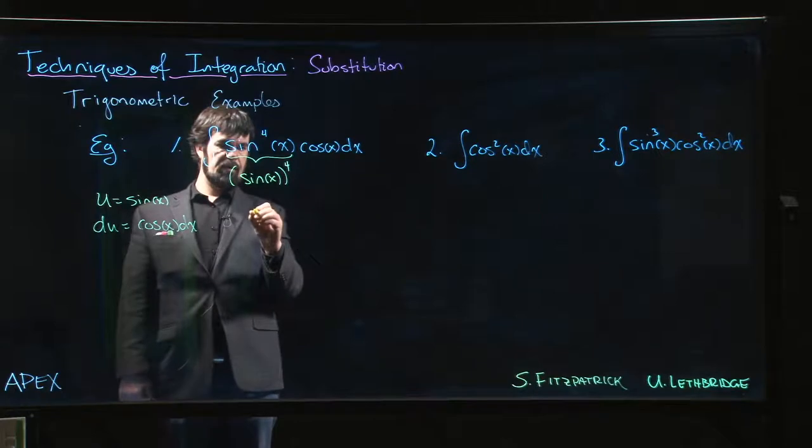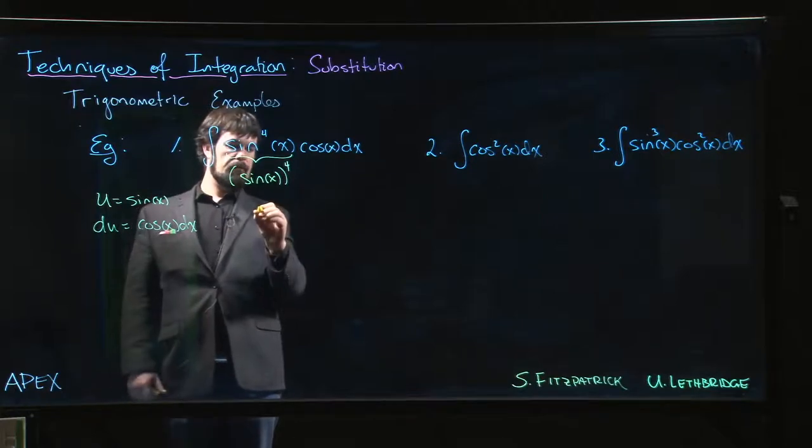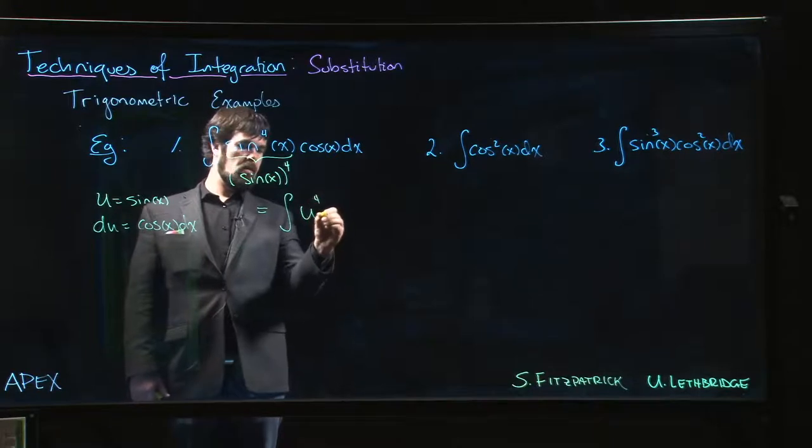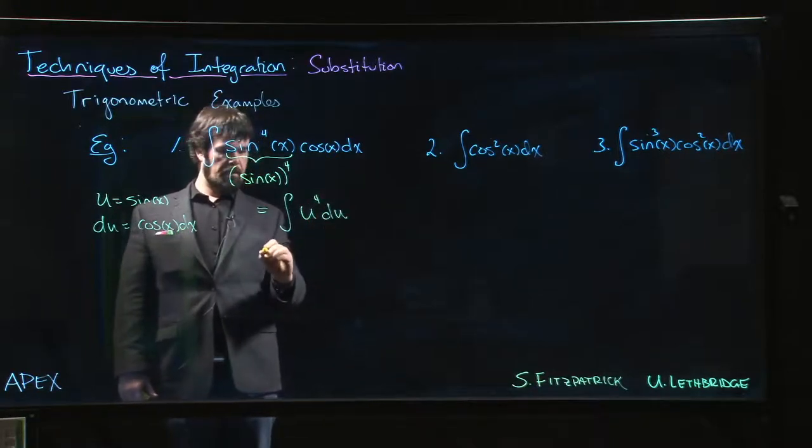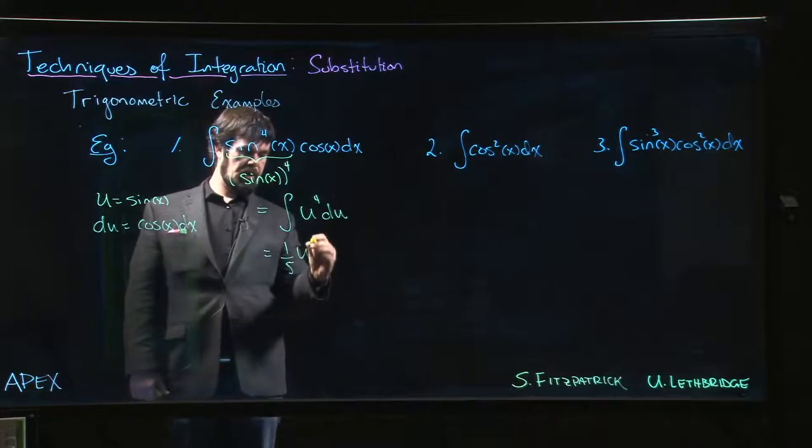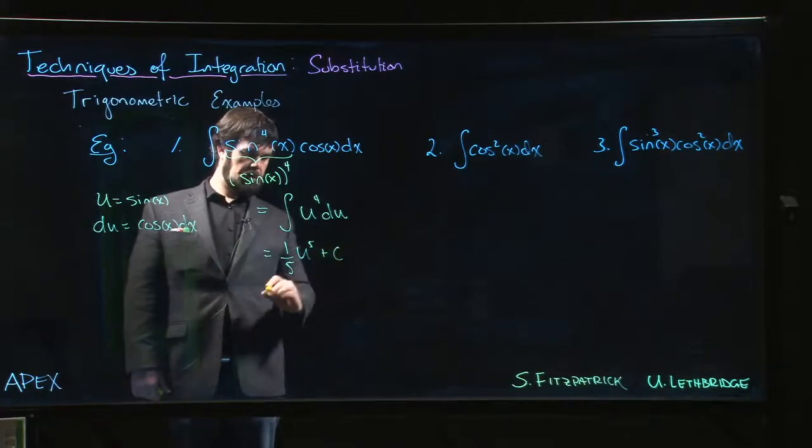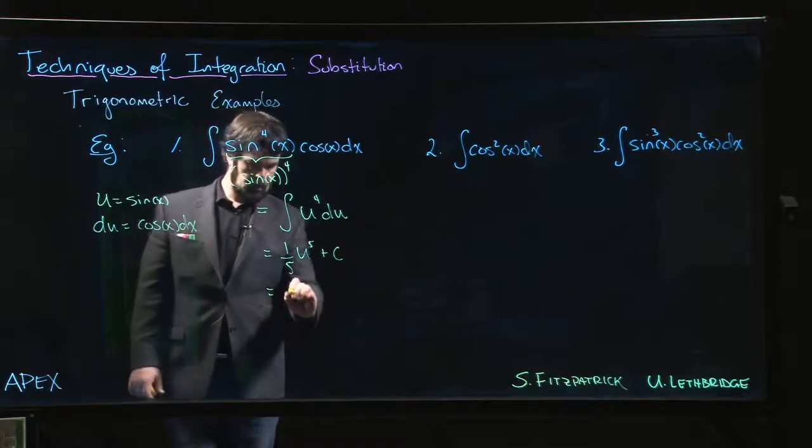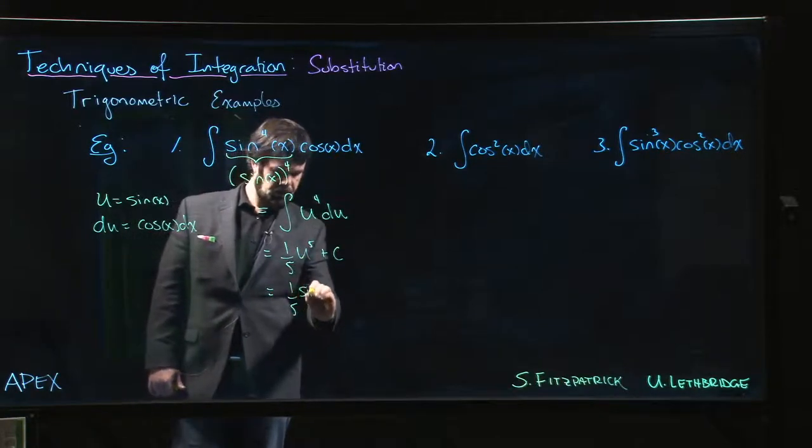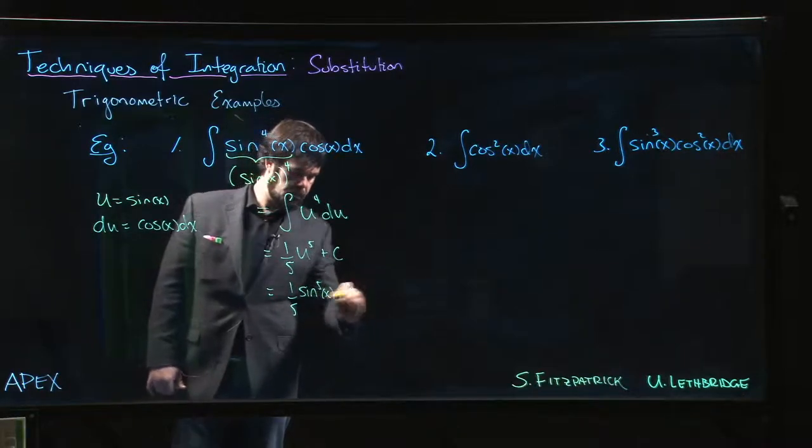This is going to be simply the integral of u to the 4 du. Power rule gives 1 over 5 u to the 5 plus c. And all that's left to do is substitute back. So this is going to be sine raised to the fifth power plus our constant.